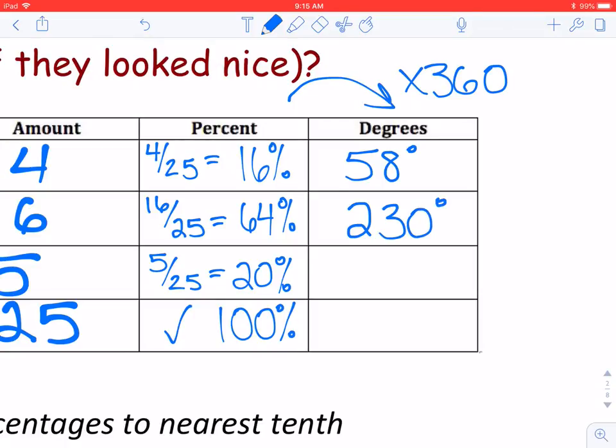20% of a circle, 20% of 360 comes out to exactly 72 degrees, no rounding necessary. And when I add those up, I get 360 exactly, which tells me that everything was done accurately.